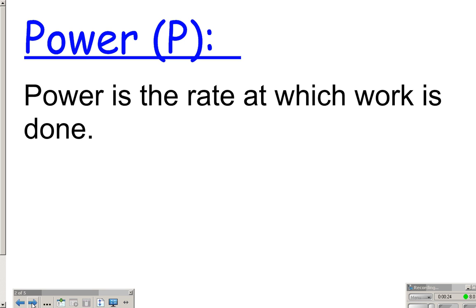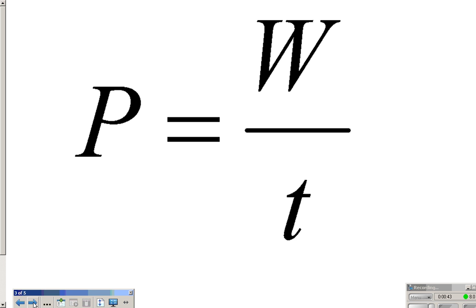First of all, let's start with the definition of power. Power is the rate at which work is done, and it's how quickly you do work. To simplify it a little bit, it's how much the energy changes or how much work is done per second or per unit time. So to calculate it, all you do is take the work and divide it by the amount of time it took to do that amount of work.